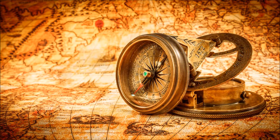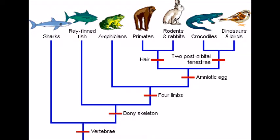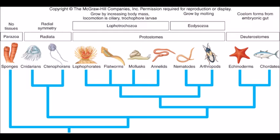Welcome to the fourth part of the Common Ancestry series. The first part looked at the history of evolutionary thought, the second part took us through tetrapods, the third part took us through fish, and the third part brought us up to the most recent common ancestor of all bilaterally symmetrical animals, called the Urbilaterian. This video will take us through the remaining animals right up to the most recent common ancestor of all animals, so let's jump right in.